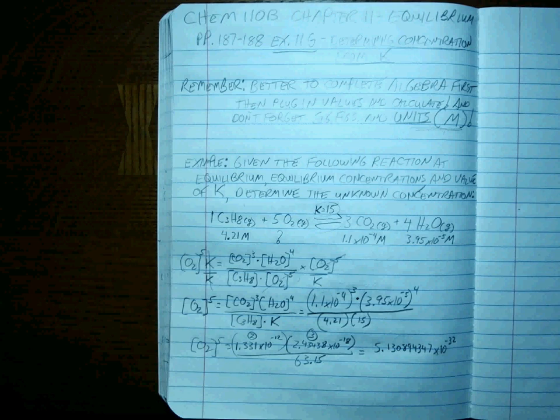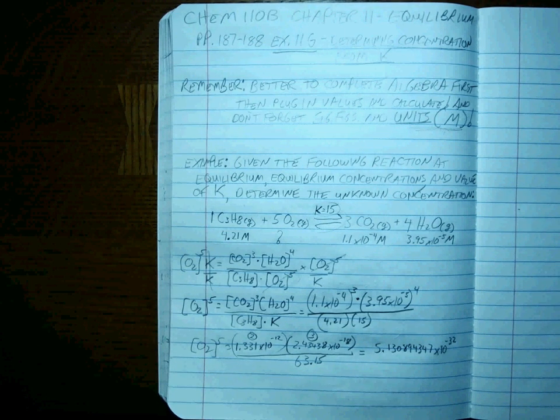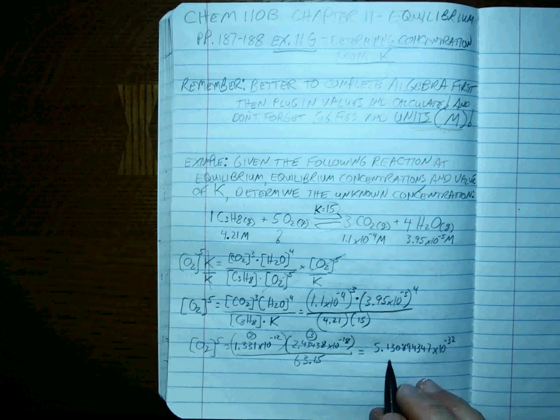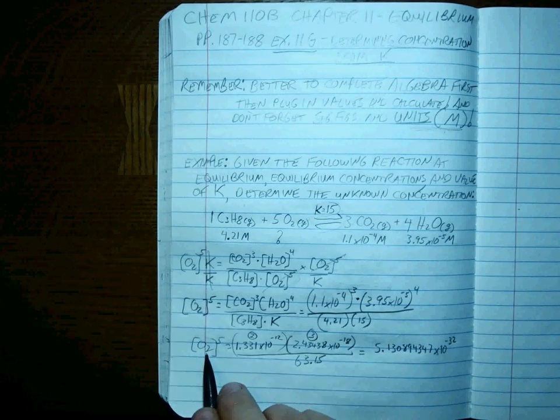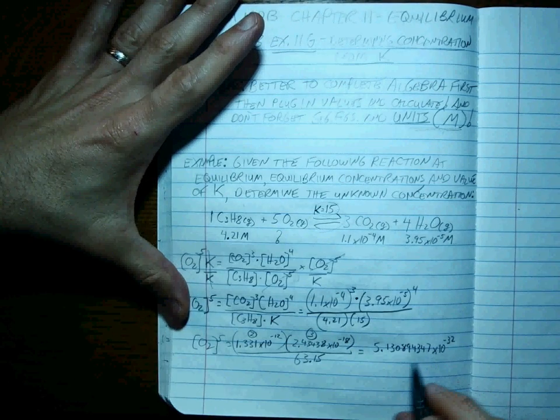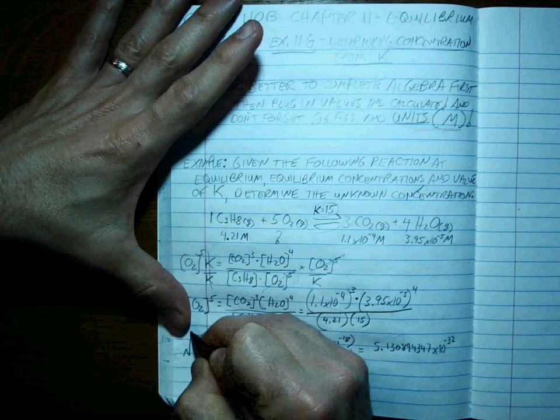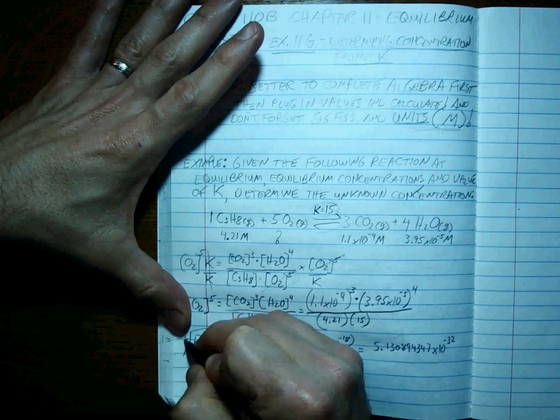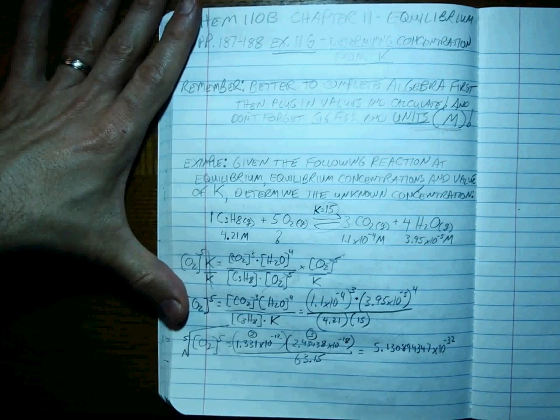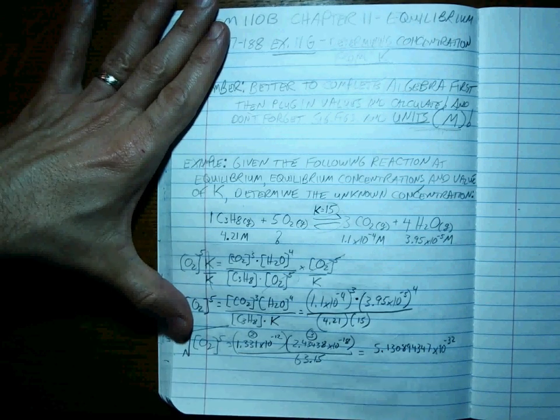Well, guess what? That's not the answer. And that's not the answer for more than one reason. The main reason is because that's the oxygen concentration taken to the fifth power. So how do you get that number that's not to the fifth power? You take the fifth root of both sides. Because, how does that work?